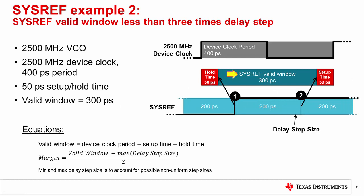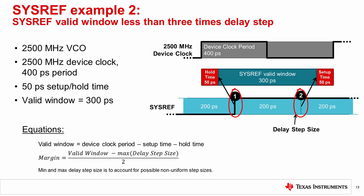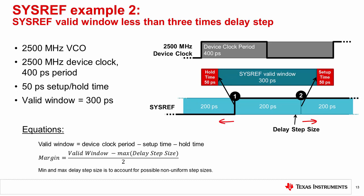In the second example, suppose the sysref valid window is less than three times the delay adjustment size. In this case, it is not always possible to have three settings of digital delay fall within the sysref valid window. The worst case margin now occurs when the skew between the device clock and sysref results in two delay adjustments at an equal distance from each edge of the sysref valid window. The formula for the margin is now: (sysref valid window minus delay step size) divided by two. Provided the skew between the device clock and the sysref is less than this value, the sysref will be deterministic. In this example, the valid window of 300 picoseconds minus the delay step size of 200 picoseconds over two results in a margin of 50 picoseconds. When calculating margin in case of non-uniform delay step size, the minimum or maximum delay step size should be used to ensure margin for the worst case.